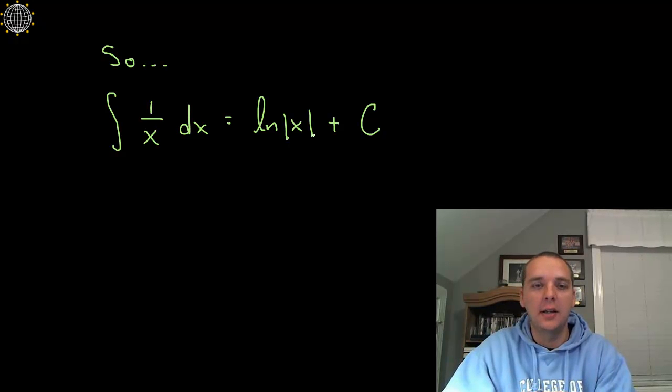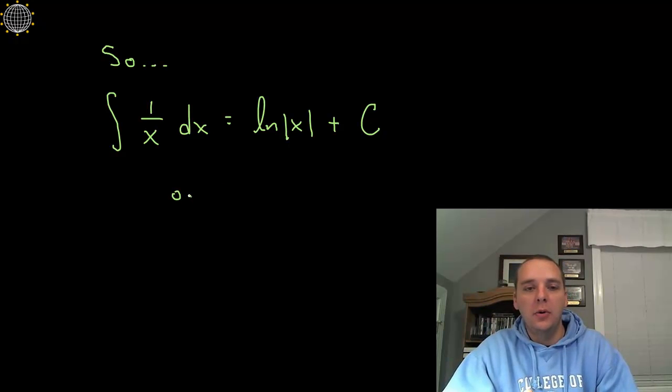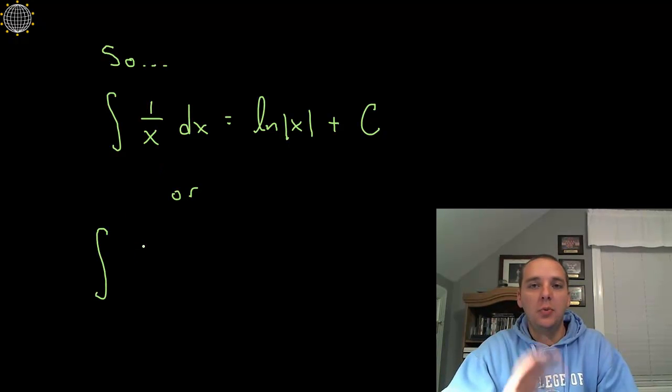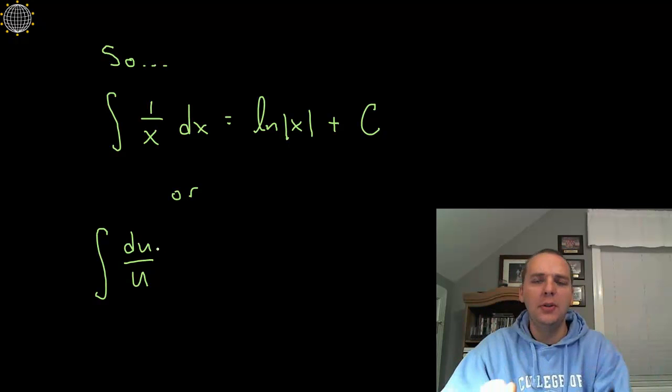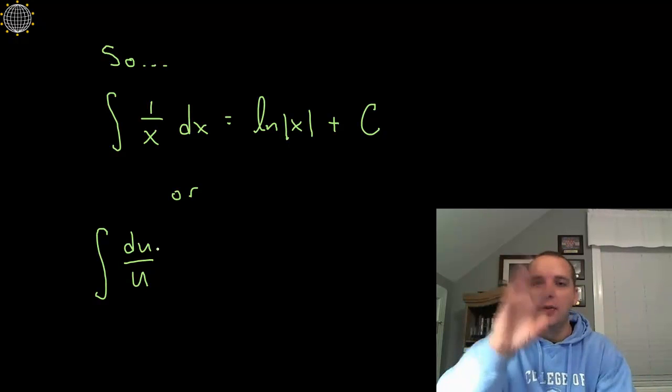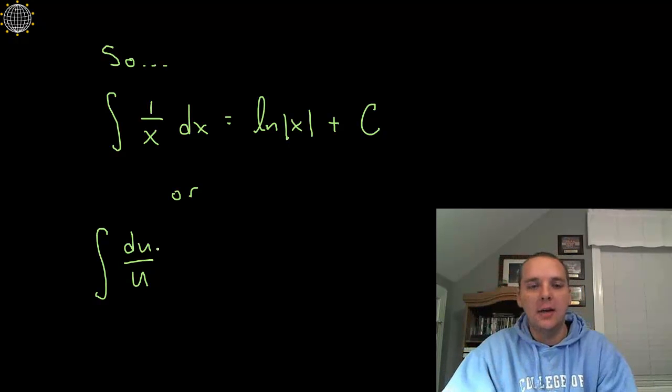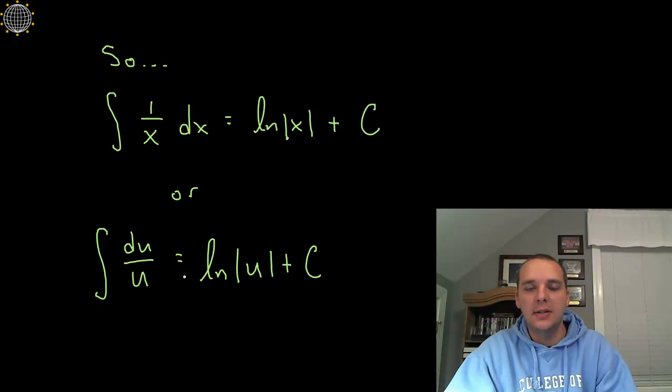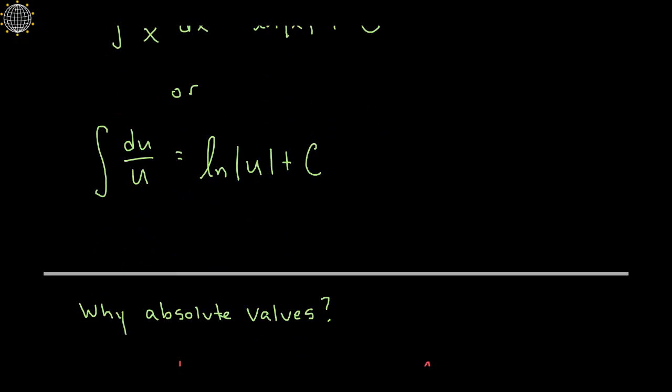Now a more general integral would be this: if you have the integral of something more generic, not just an x but something that's a full-blown function of x, well then you'll need 1 over u du, or some people would prefer to write this with the du in the numerator and have it as du over u. You see that modeling the derivative idea that we did a little while ago—the derivative of the inside over the inside. But no matter how you write it, this integral would be the natural log again of the absolute value of u plus C. So same idea there, and we'll do some examples in just a little bit here.